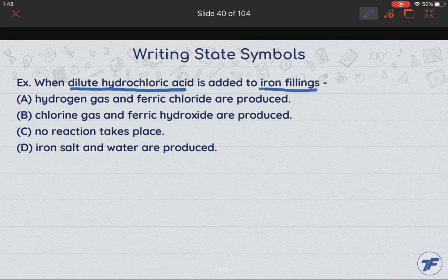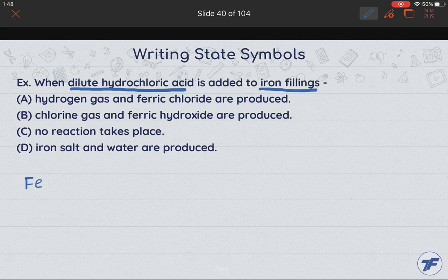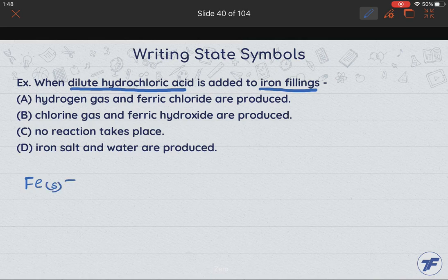So first of all we have to write the word reaction in the symbol form and then we will see what is made. So iron filings means iron Fe is in the solid form. We will react with dilute hydrochloric acid. This is a symbol.